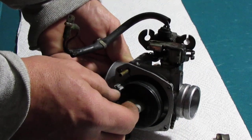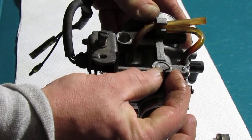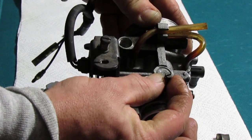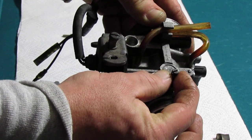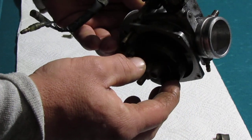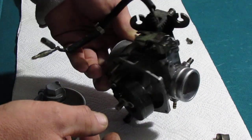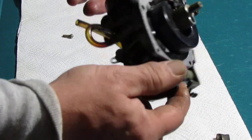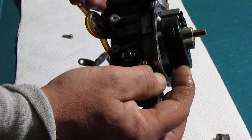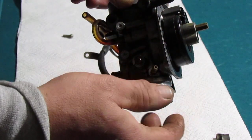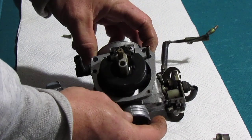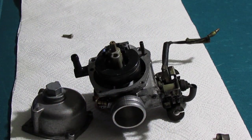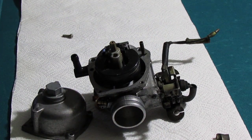But the pilot air screw - one and one quarter turns out from lightly seated to start it off. Float level 15 millimeters. Sitting on an incline like that, you want it to just close the valve. You don't want it to compress the needle or the spring inside the needle. And that's how you set up one of these carburetors. If you can do that, you're going to be in really good shape when you go to fire it up.